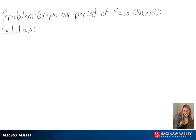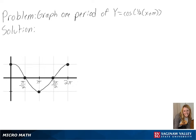Our problem is to graph one period of y equals cosine of a half times x plus pi. We can look at an original graph of y equals cosine of x to see how ours will be changing.